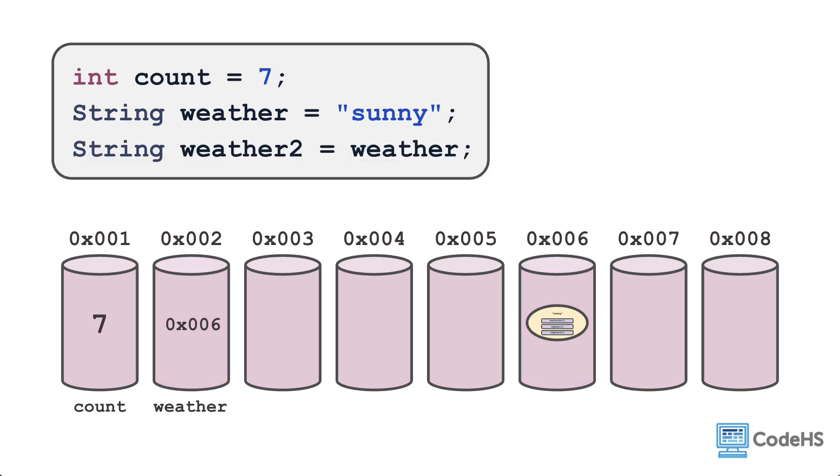Now imagine you create a second string variable, called weather2, and set it equal to the variable weather. Can you guess what is going to happen? The weather2 variable will get placed into memory and contain the same reference to the original string object stored at location 0x006. Both variables weather and weather2 are pointing to the same string object. Now whenever weather2 gets used, 0x003 lights up and points to 0x006 so that the actual string object is being accessed and used.